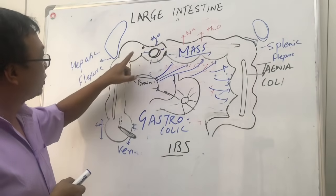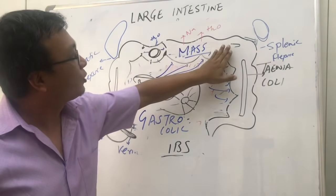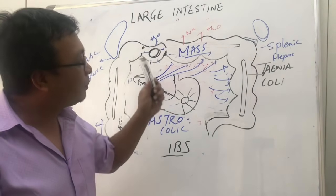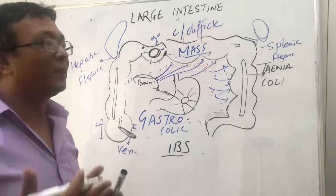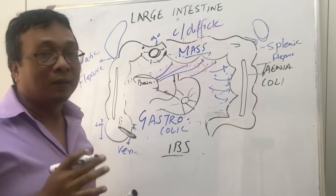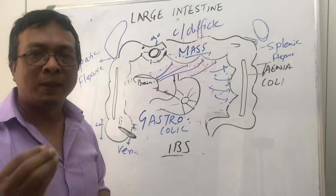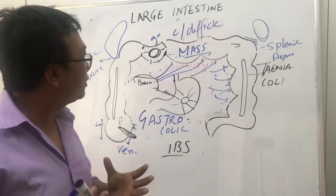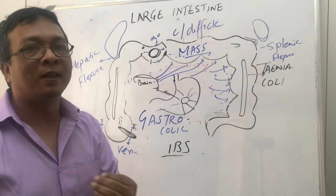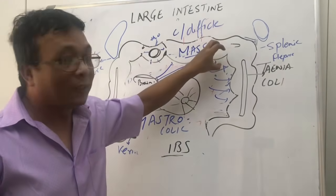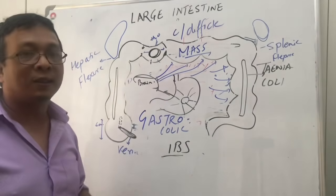Sometimes there is antibiotic-associated diarrhea. When people take a lot of antibiotics — such as cephalosporins, penicillin group, or quinolones like ciprofloxacin — the normal gut flora is destroyed. When the normal gut flora is damaged, a particular bacterium called Clostridium difficile starts dominating the colon. It causes increased water secretion and decreased water absorption, resulting in diarrhea. This is called antibiotic-associated diarrhea.